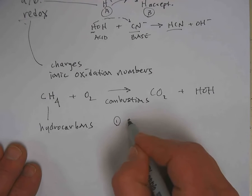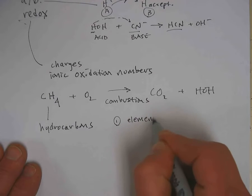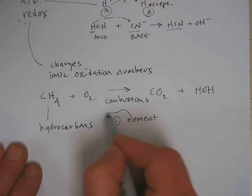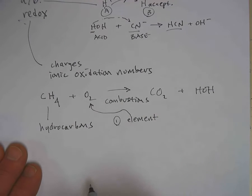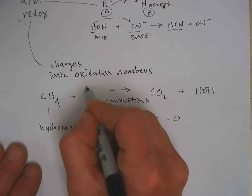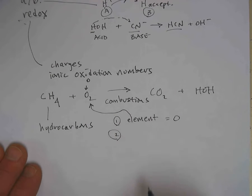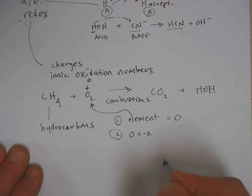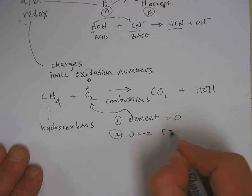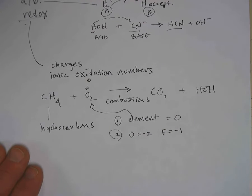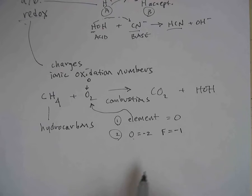You can assign oxidation numbers to substances according to a set of rules. Rule number one is if that something is in its elemental state alone by itself, like oxygen is right here, it has an oxidation number of zero, so this has an oxidation number of zero. Number two, oxygen is usually minus two and fluorine is always minus one. Now there is an exception for oxygen with hydrogen peroxide when it's minus one, but that's fairly rare.